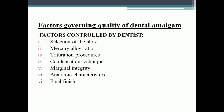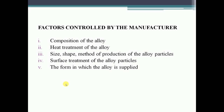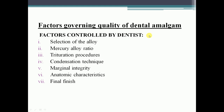Factors governing the quality of dental amalgam: factors controlled by the dentist include selection of alloy, mercury-alloy ratio, trituration procedure, condensation technique, marginal integrity, anatomic characteristics, and final finish. Factors controlled by the manufacturer include composition of the alloy, heat treatment, size, shape, method of production of alloy particles, surface treatment of alloy particles, and the form in which the alloy is supplied.